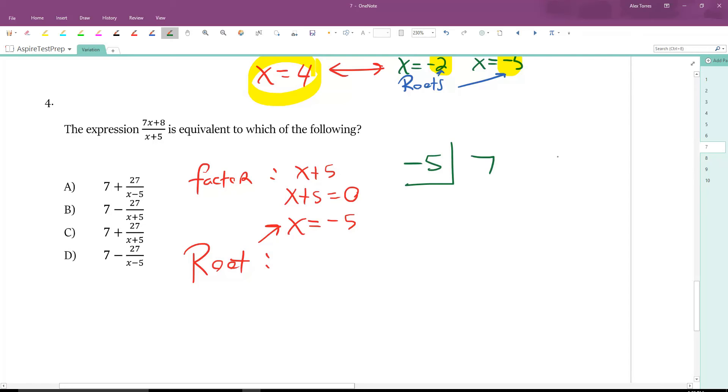And 7x plus 8. Bring the 7 down. Multiply, add, multiply, add. But here we only multiply and add once. So 7 times negative 5 is negative 35. Adding straight down negative 27. And the answer is 7 remainder negative 27. Or 7 and negative 27 over the thing we're dividing by. In the factor form. So 7 minus 27 over x plus 5. Choice B.